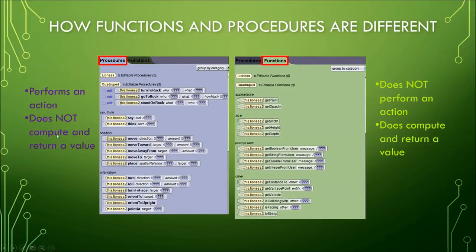Procedures do not compute and return a value. Functions always compute and return a value. Functions are basically used to get information. To get information it has to compute and then return a value.